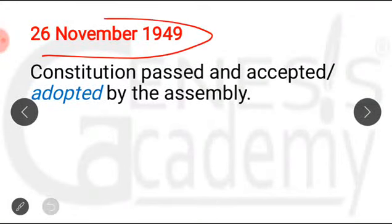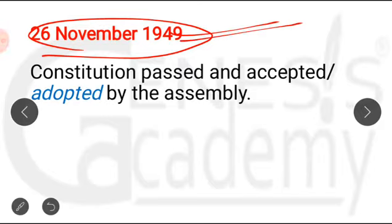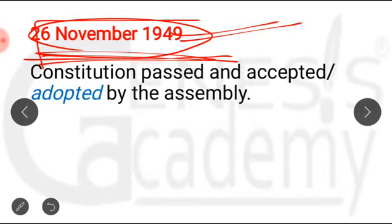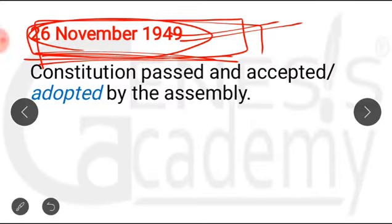On 26th November 1949 — a very important date — you have to remember that on this very date the Constitution was passed, accepted, or adopted by the assembly. The draft Constitution was moved and finally passed on 26th November 1949. On the same day, first the Constitution was adopted and after that the Preamble was also passed. This date has been mentioned in the Preamble as the date of adoption of the Constitution.